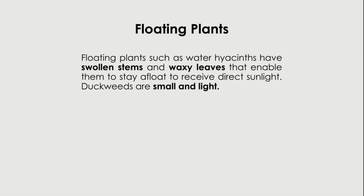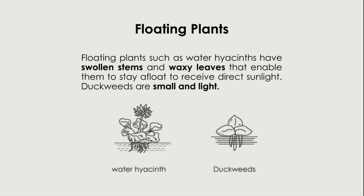Floating plants such as water hyacinths have swollen stems and waxy leaves that enable them to stay afloat to receive direct sunlight. Duckweeds, on the other hand, are small and light. These two are some examples of floating plants.